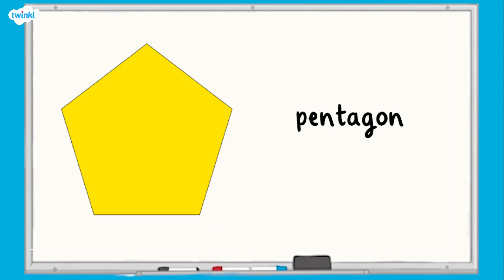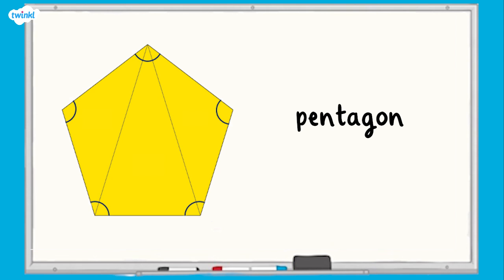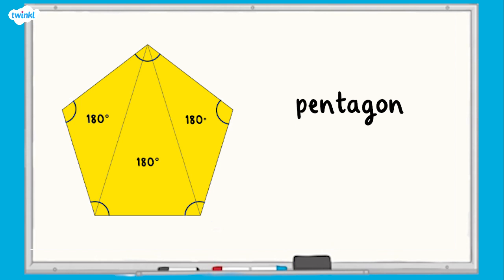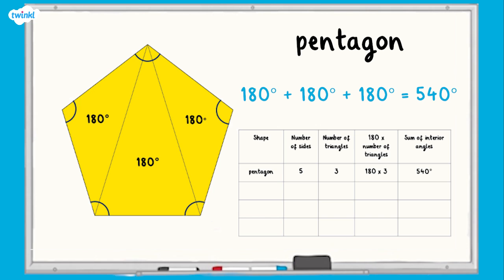In regular polygons, each interior angle is also equal. Remember, interior angles are the angles inside the shape. To calculate the total interior angles inside this pentagon, we can partition the shape into three triangles. The sum of the angles in a triangle are equal to 180 degrees. Therefore, the interior angles in a regular pentagon will be 180 + 180 + 180, which is equal to 540 degrees.